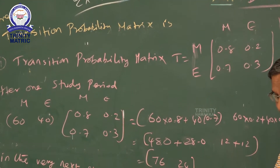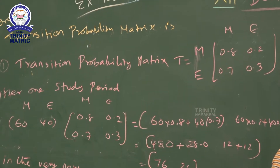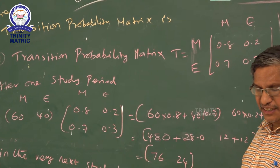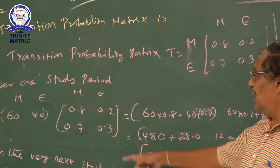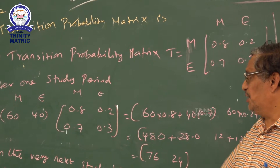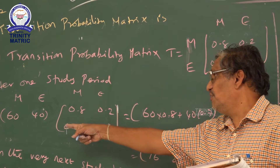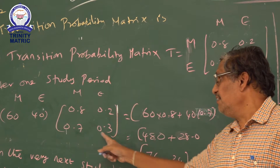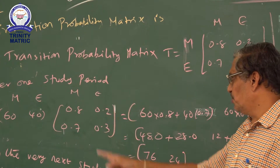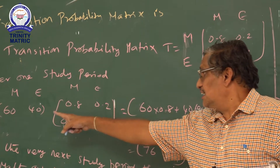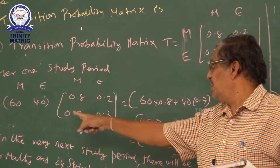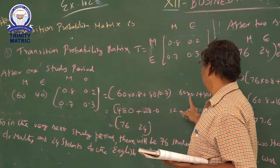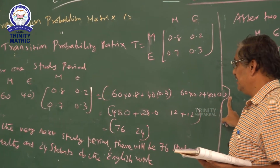Initially, 60 students studied math and 40 students studied English. So the initial state is [60, 40]. We multiply [60, 40] by the transition probability matrix (math, English: 0.8, 0.2 / 0.7, 0.3). First row, first column: 60 × 0.8 plus 40 × 0.7. First row, second column: 60 × 0.2 plus 40 × 0.3.